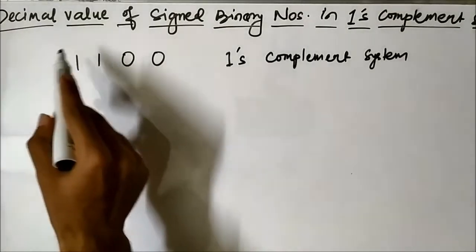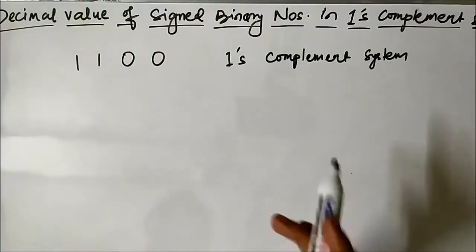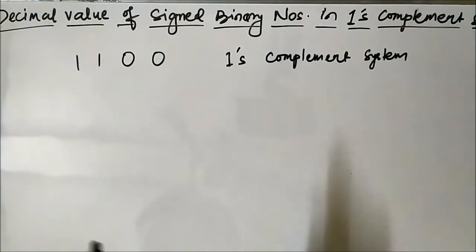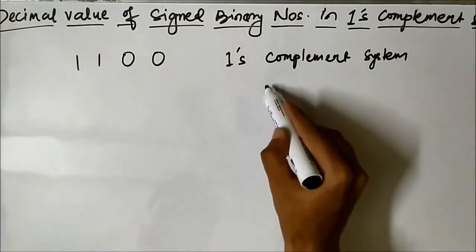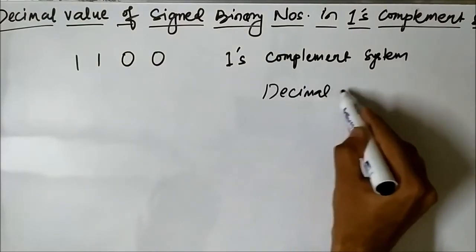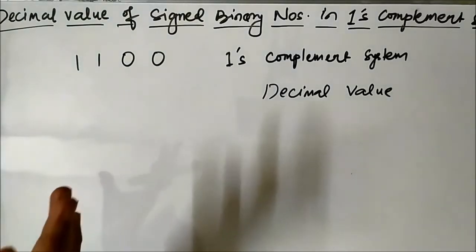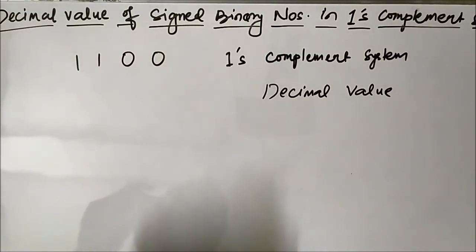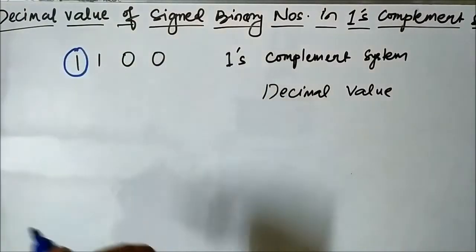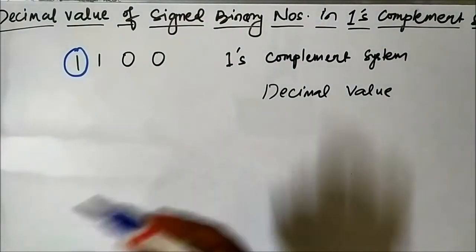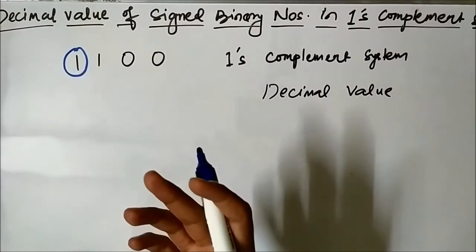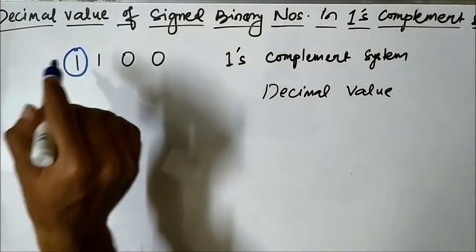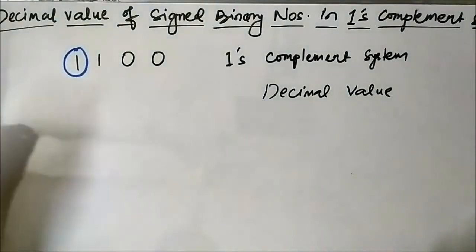We have been given that this is a signed binary number and it is represented in 1s complement system. We have to determine its decimal value — what is the value of this number in base 10 system? Just by looking at this number, we can say that it is a negative integer. Why? Because this sign bit is 1, and be it the sign magnitude system, 1s complement, or 2s complement system, if the leftmost bit is 1, it means it is negative.